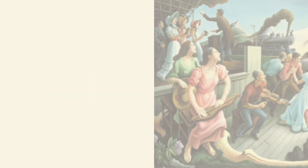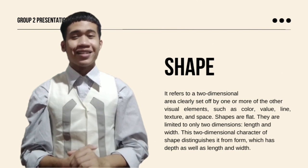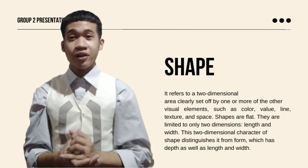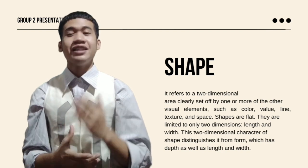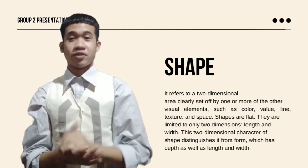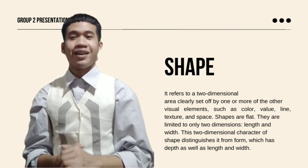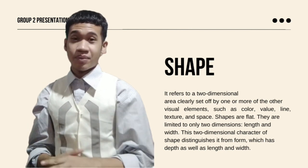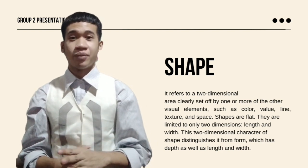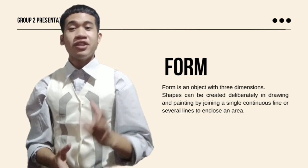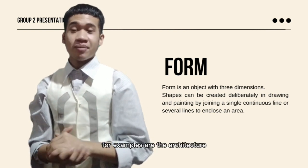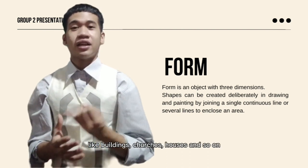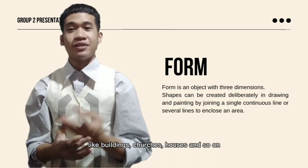Shape refers to a two-dimensional area, clearly set up by one or more of the visual elements, such as color, value, texture, line, and space. Shapes are flat and are only limited to two dimensions — length and width. This two-dimensional character of shapes distinguishes it from form, while form is a three-dimensional object. Examples are the architecture found in cities like buildings, churches, and houses.